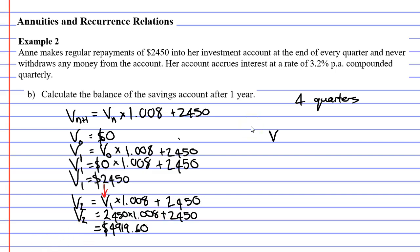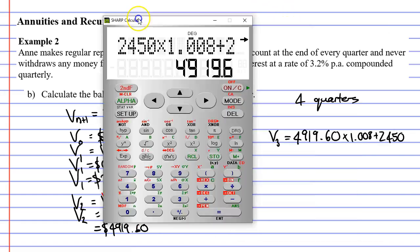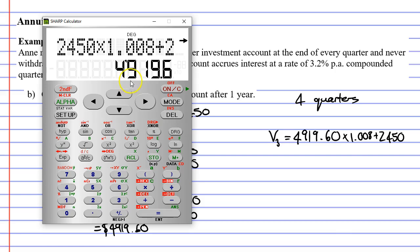Let's now find V3. I'm going to take a shortcut. Rather than writing V2 here, I know that V2 is $4,919.60. So I'm going to write the amount straight in. Then I'm going to times it by 1.008 and I'm going to add $2,450. Bringing up my calculator, I've already got the $4,919.60 in there. I times it by 1.008 and I add the $2,450 deposit. I end up with $7,408.96.